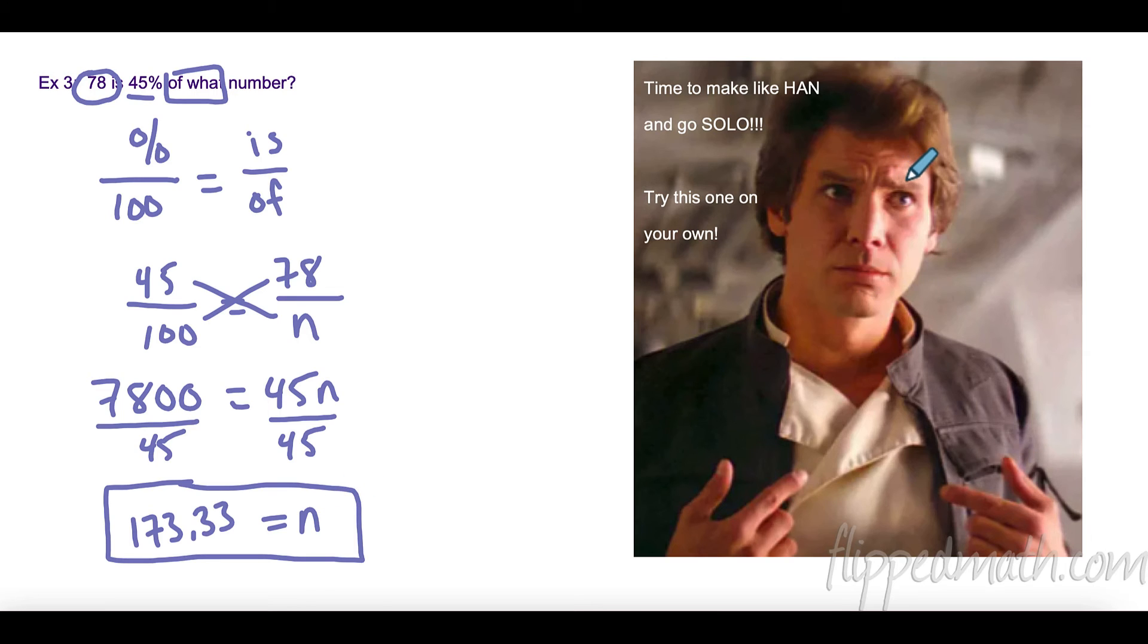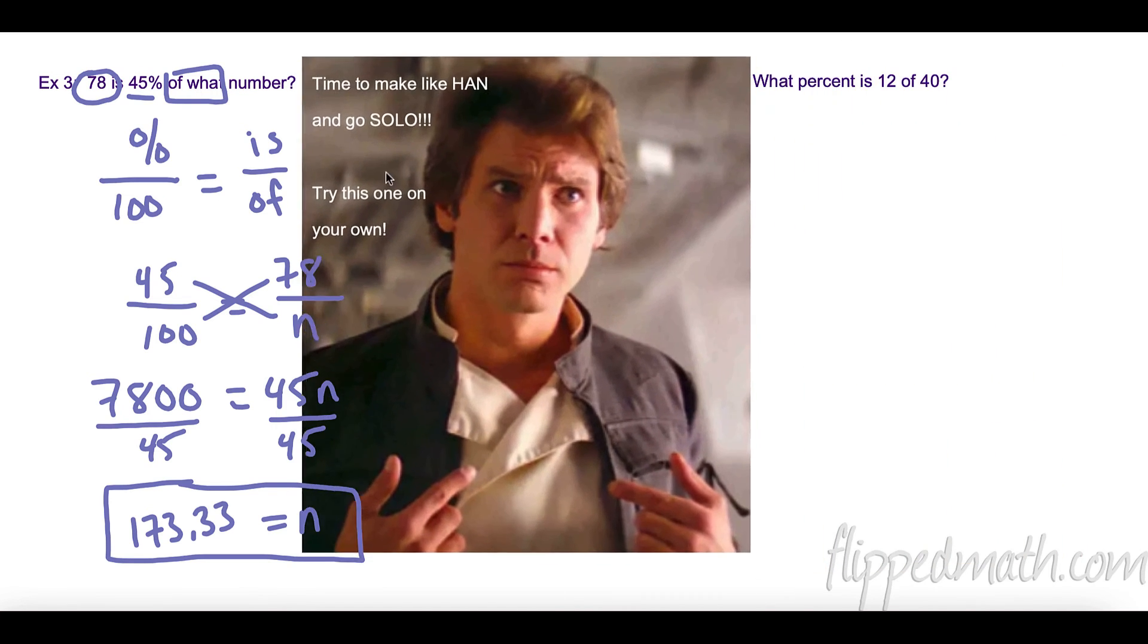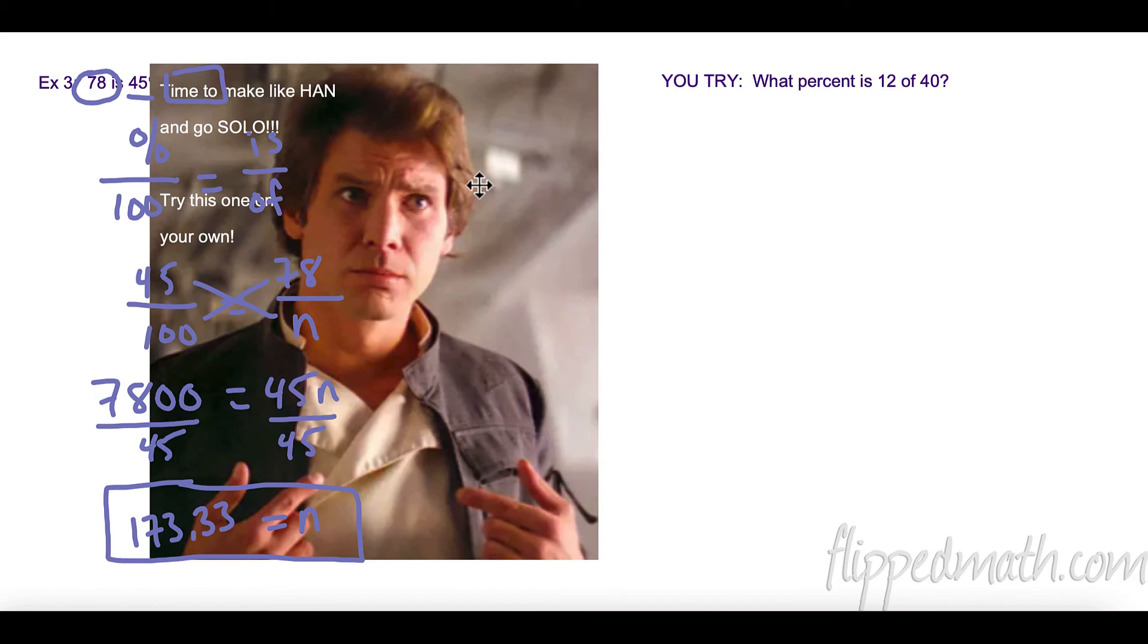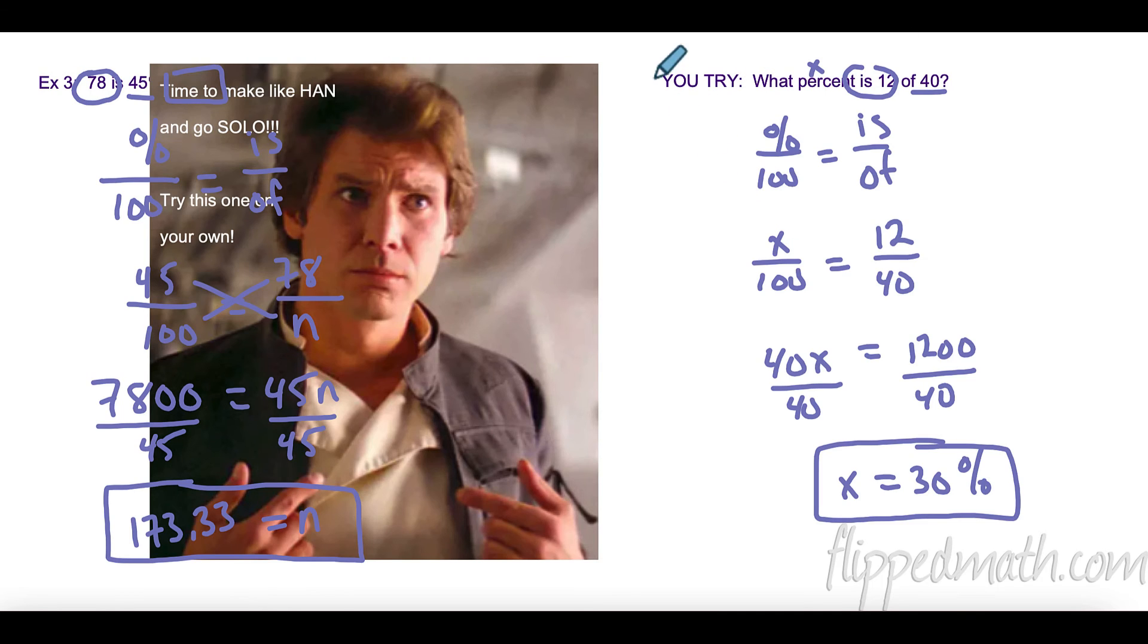So what I want you to do now - it's time to go solo. Try this one on your own. Just do your best, don't worry if you get it right or wrong, all I want you to do is try. Pause the video and try this one on your own. Awesome! So what percent - that's my variable. I don't know what percent 12 is of 40. My percent is a variable, 100 stays the same, 'is' is 12, 'of' is 40. We cross multiply, divide by 40, and we got 30%.